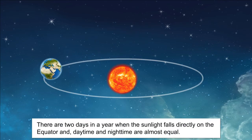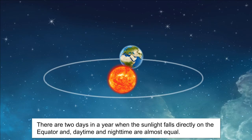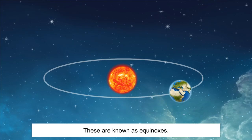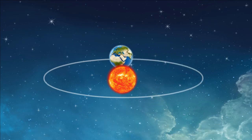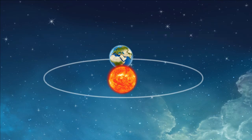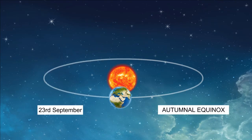There are two days in a year when the days and nights are equal. The sun shines directly on the equator on these two days. These are called equinoxes. Equinox literally means equal night. In the northern hemisphere, 21st March and 23rd September are known as the spring or vernal equinox and autumnal equinox respectively.